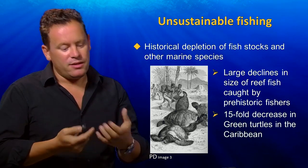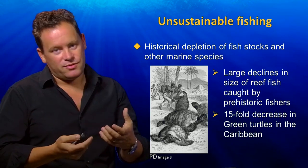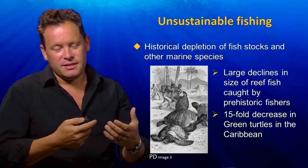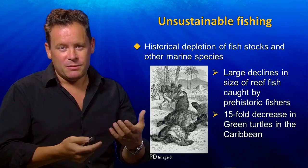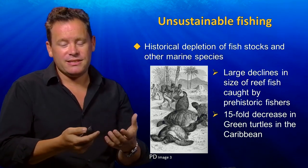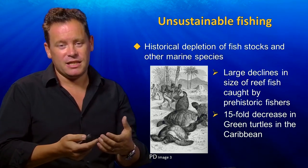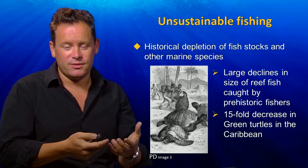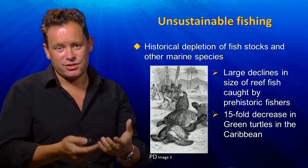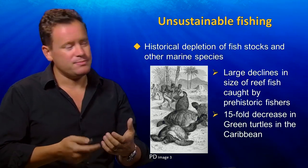Another example is turtles. It's estimated that Caribbean green turtles have declined about 15-fold since more natural population levels.